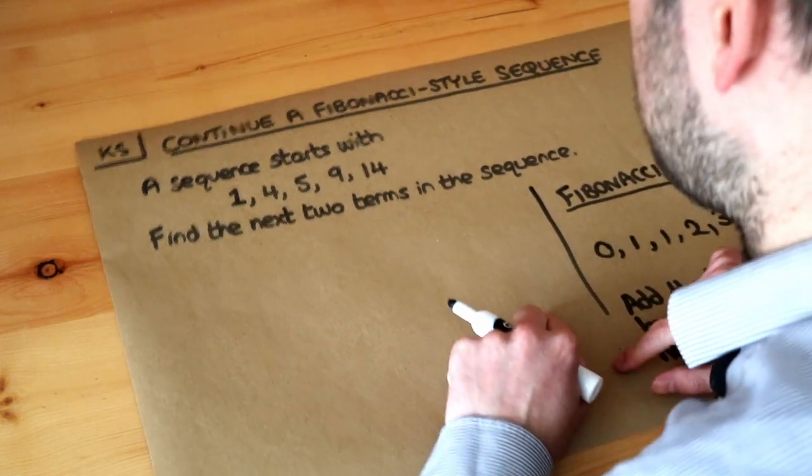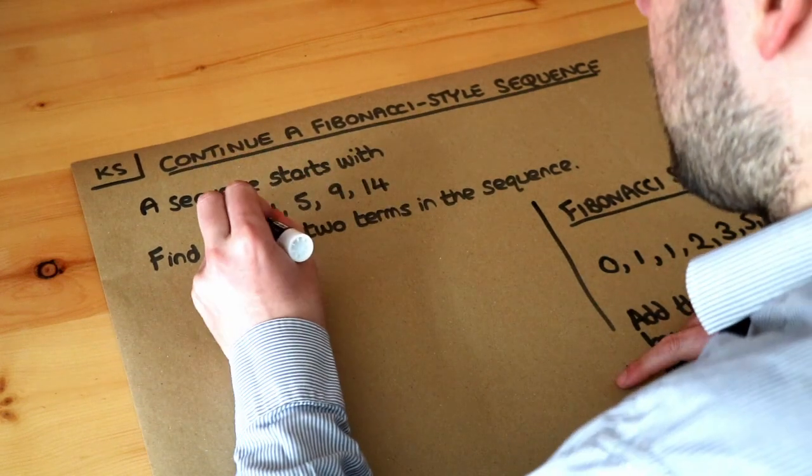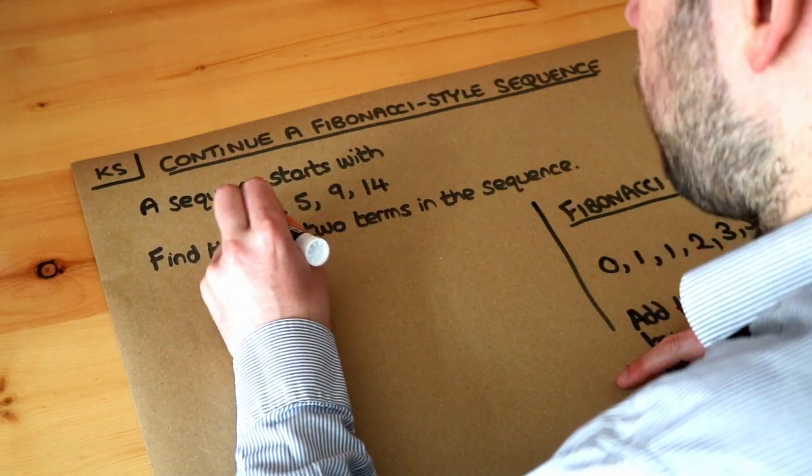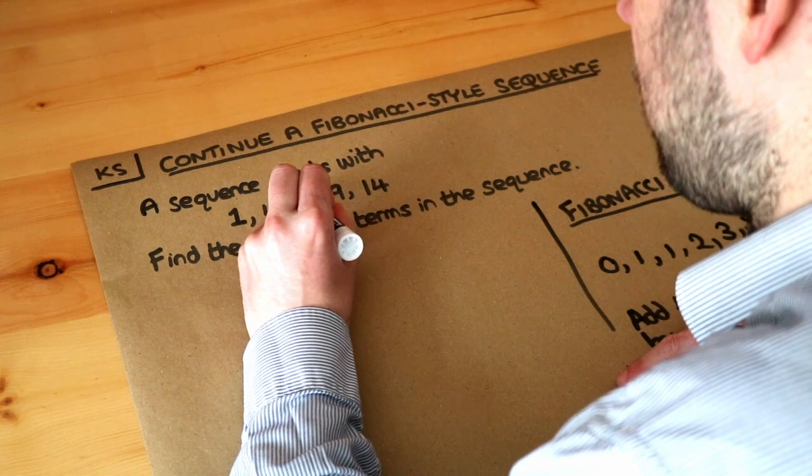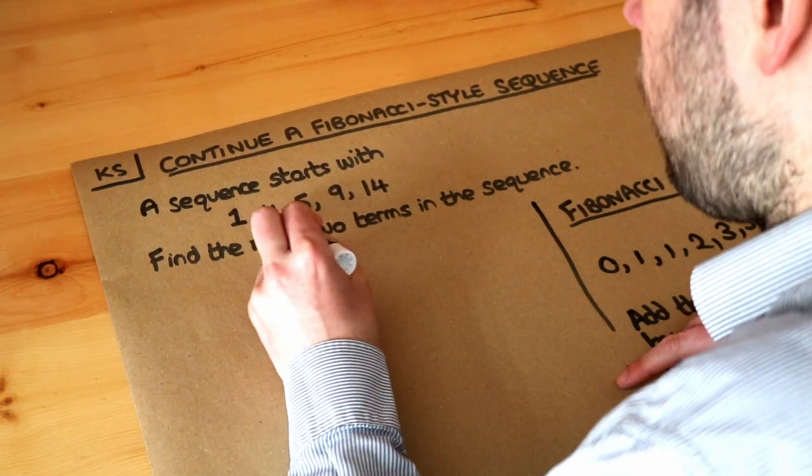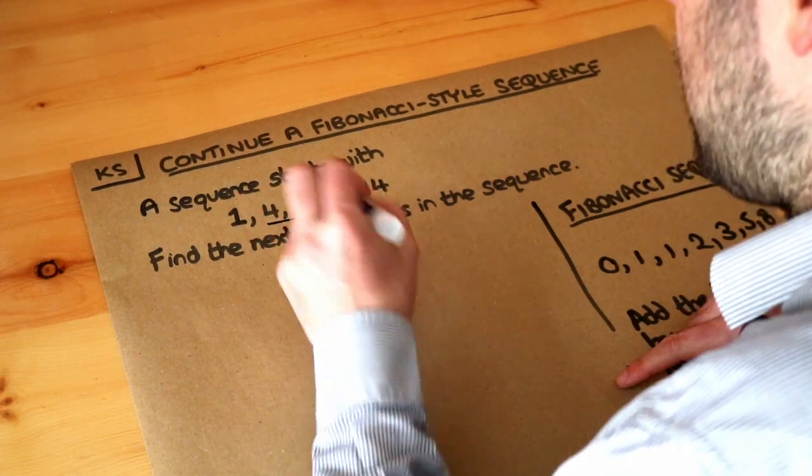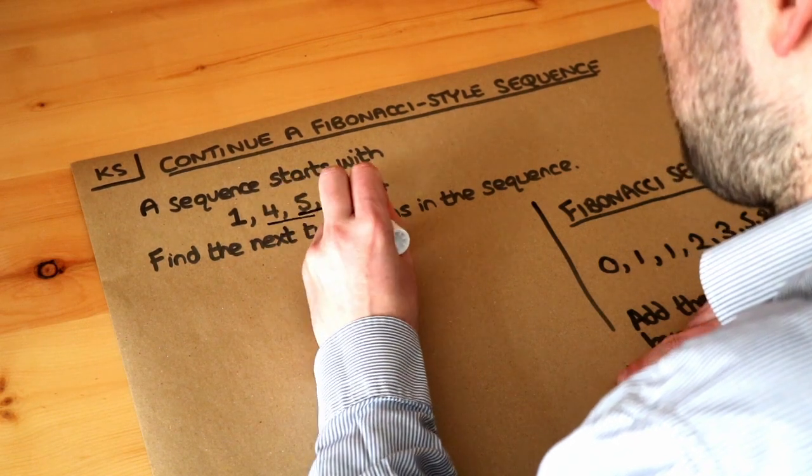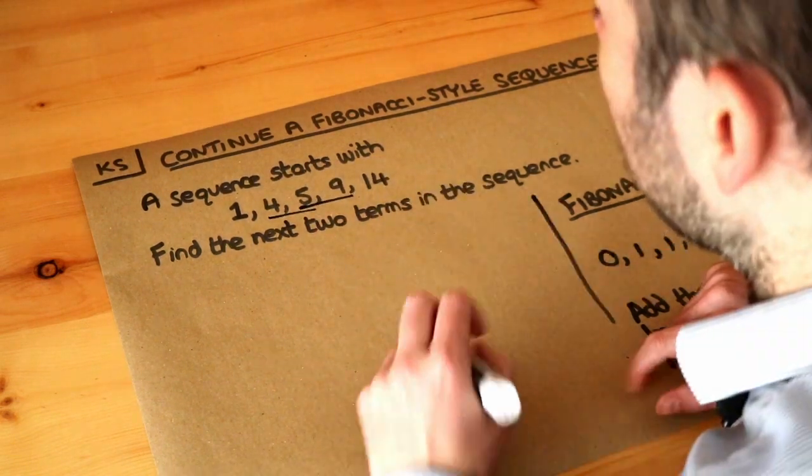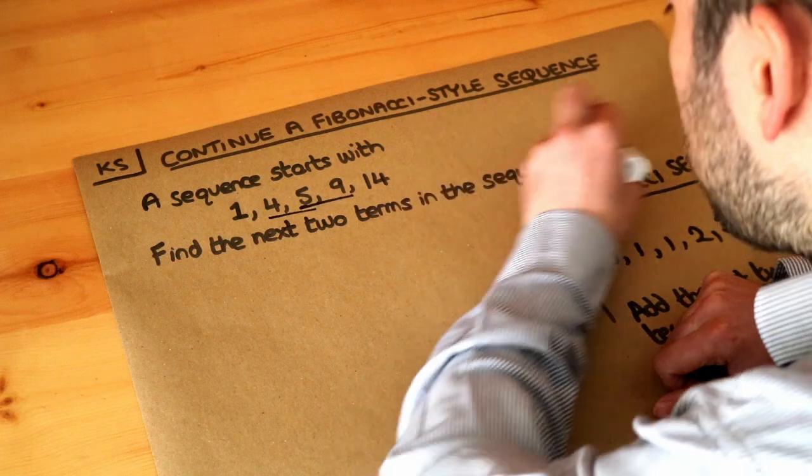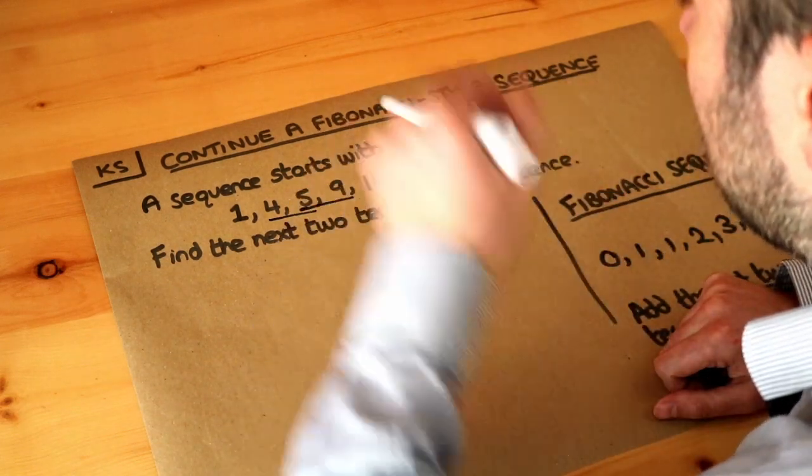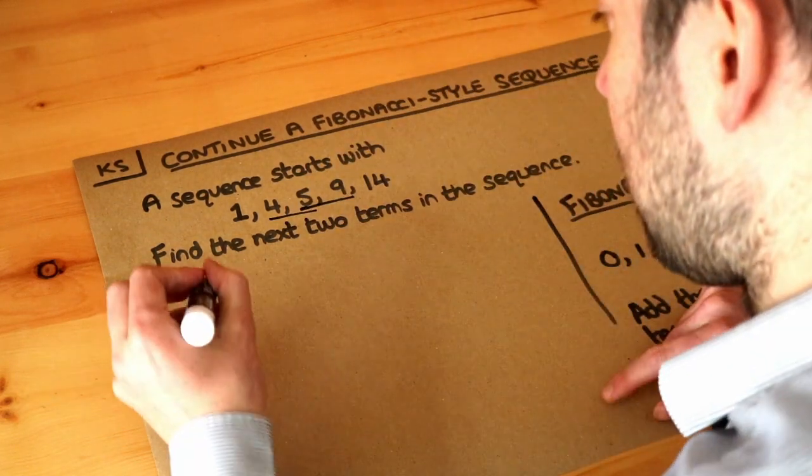Whereas this starts with different numbers. But can we see if we add each two terms, 1 plus 4 is equal to 5. If we add these two terms, 4 plus 5 is equal to 9. If we add these two terms, 5 plus 9 is equal to 14. And so we can continue to get more terms in this sequence by just continuing that same rule.